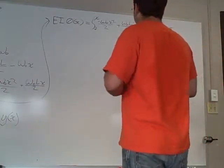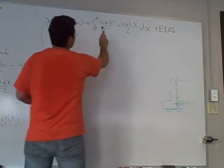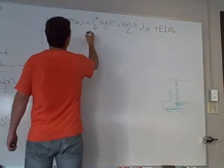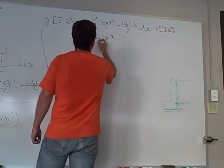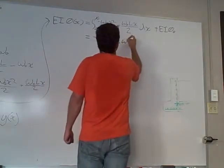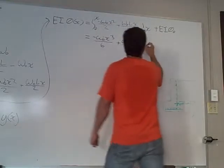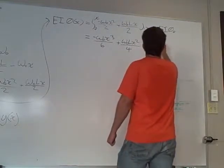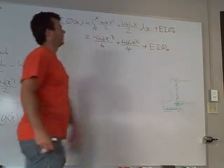And so when we integrate, integrate on a moment, we're going to get negative WLX cubed over six plus WLX squared over four plus EI of theta. And we don't know what this is right off the bat.